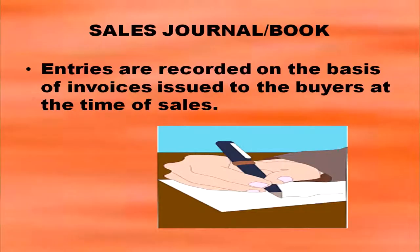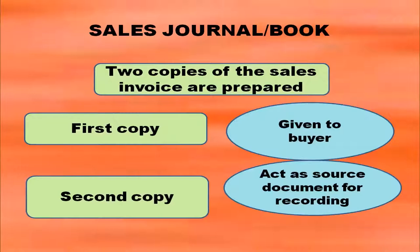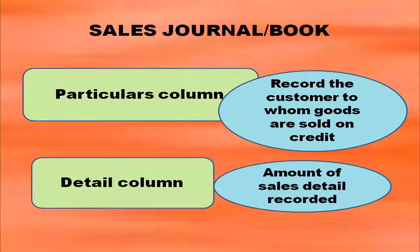Entries are recorded on the basis of invoices issued to buyers at the time of sale, and two copies of the sales invoice are prepared. The first copy is given to the buyer and the second copy acts as a source document for recording. In the sales book we have a particulars column where you record the name of the customer to whom goods are sold on credit, and in the details column the amount of sales details are recorded.